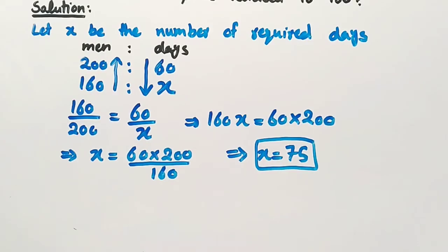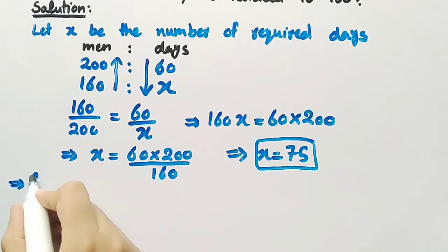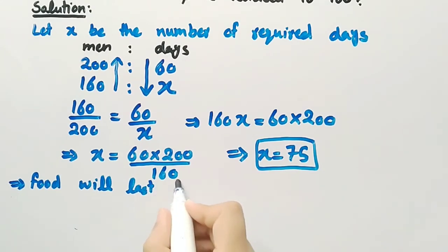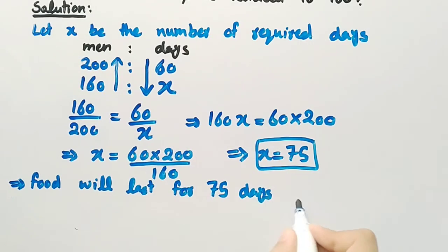This means that food will last for 75 days if the number of men is 160.